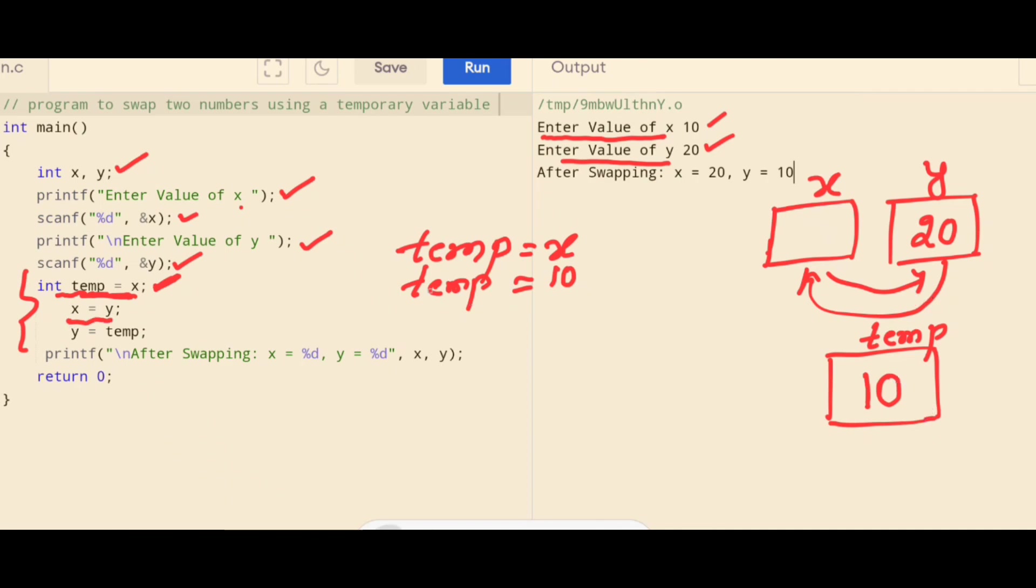In the next statement, what is that? Y is assigned to x. Always you have to make a habit of reading this statement like y is assigned to x. You should never read x equal to y. This is not an equal operator. It is an assignment operator. So, y is assigned to x. What is the value of y? Y you have given 20. So, 20 is assigned to x.